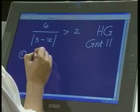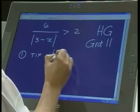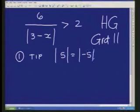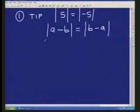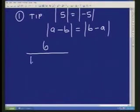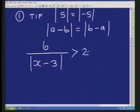Tip number 1. The absolute value of 5 is the same as the absolute value of minus 5. Inside an absolute value, we're allowed to change the sign. So the absolute value of A minus B is exactly the same as the absolute value of B minus A. So the very first thing I would do is I would change that absolute value of 3 minus X to X minus 3. That is the first thing I would do because it's much easier if you use X minus 3 rather than 3 minus X.